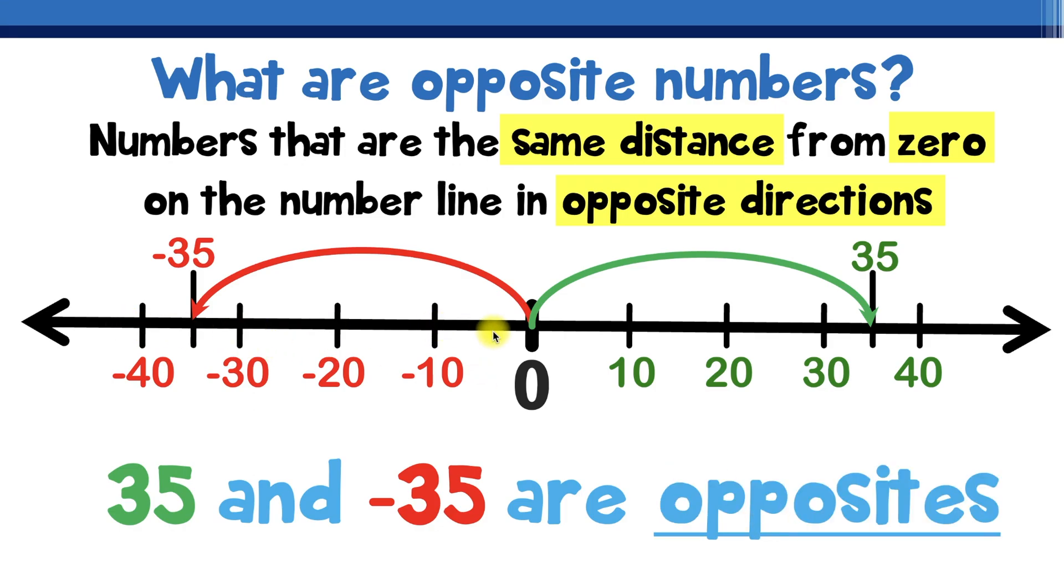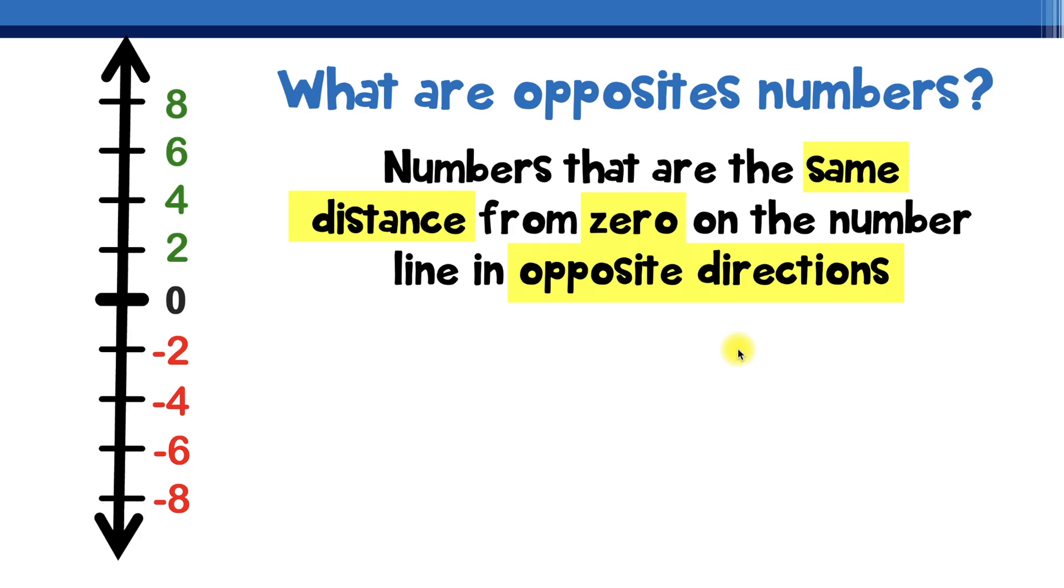Now so far we've seen these horizontal number lines but what if we had a number line that goes up and down called a vertical number line? Well it would be the same idea. What if we start up here at number eight? Well if we start up here at positive 8 that means the opposite would be negative 8. And the reason the opposite is negative 8 is because positive 8 is 8 spaces above 0, and negative 8 is still 8 spaces but this time it's 8 spaces below 0. So we would say positive 8 and negative 8 are opposites.